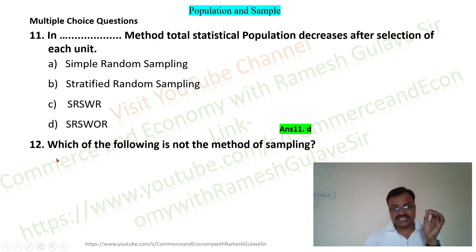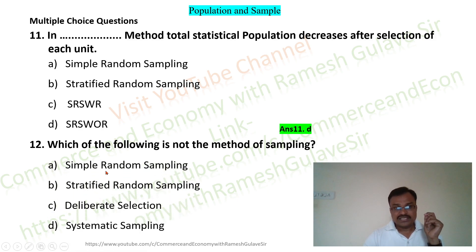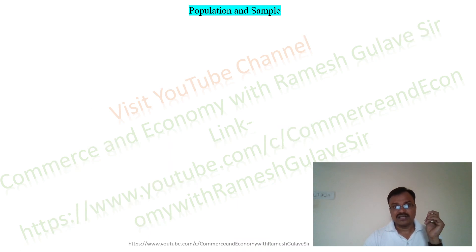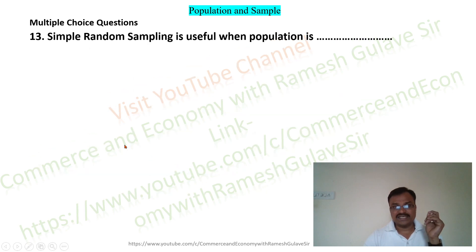The next question says: which of the following is not a method of sampling? The options are: simple random sampling, stratified random sampling, deliberate selection, and systematic sampling. Deliberate selection is not a method of sampling, so option C is the right answer.